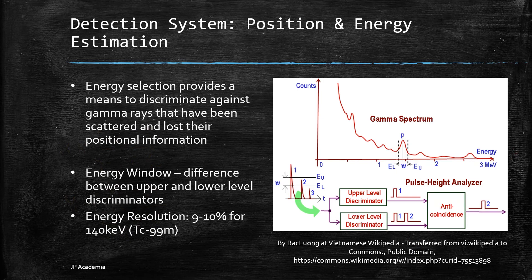Let's talk about energy estimation. Energy selection provides a means to discriminate against gamma rays that have been scattered and lost their positional information. This is done by narrow pulse height analyzer window centered on the photopeak P, illustrated in this figure.